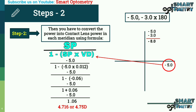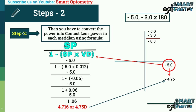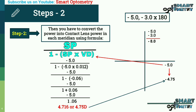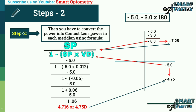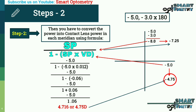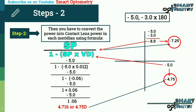So converting minus 5 into contact lens power gives minus 4.75. Applying the same formula to minus 8 gives minus 7.25 diopters. Therefore, in the horizontal meridian we have contact lens power of minus 4.75, and in the vertical meridian we have contact lens power of minus 7.25.